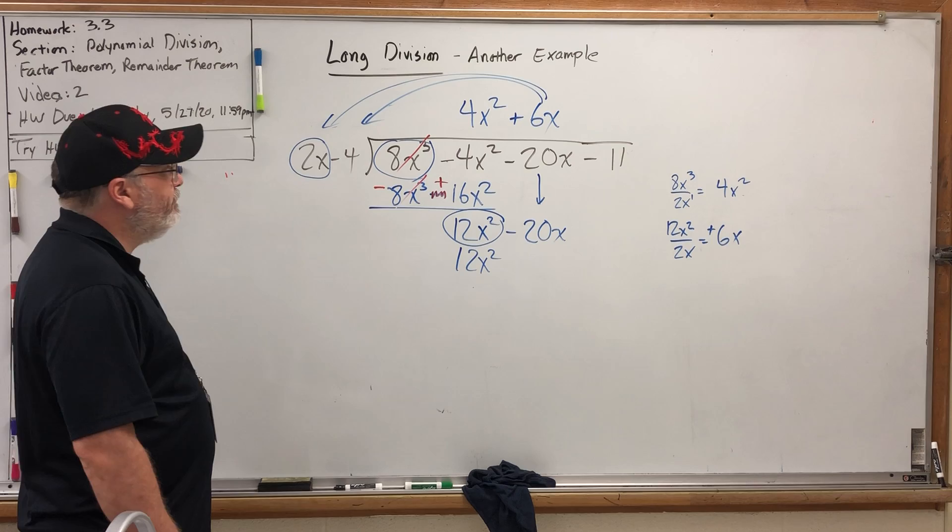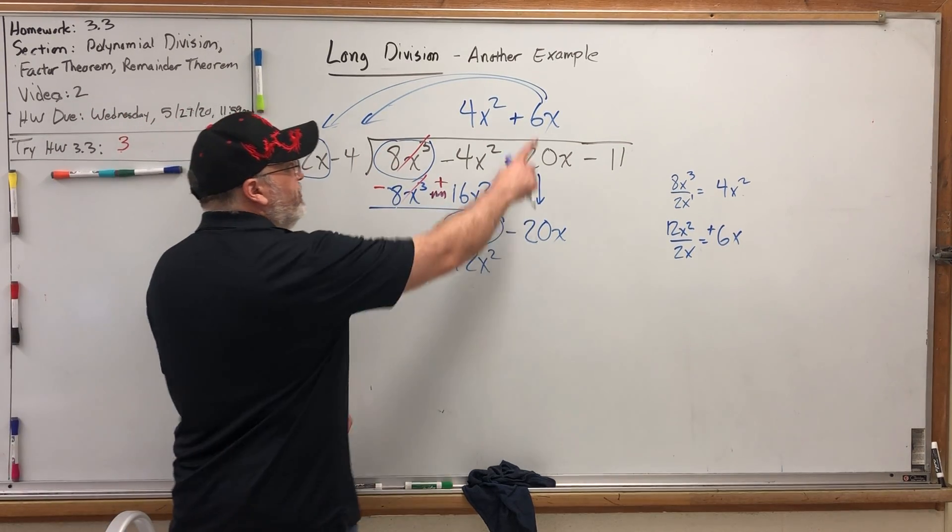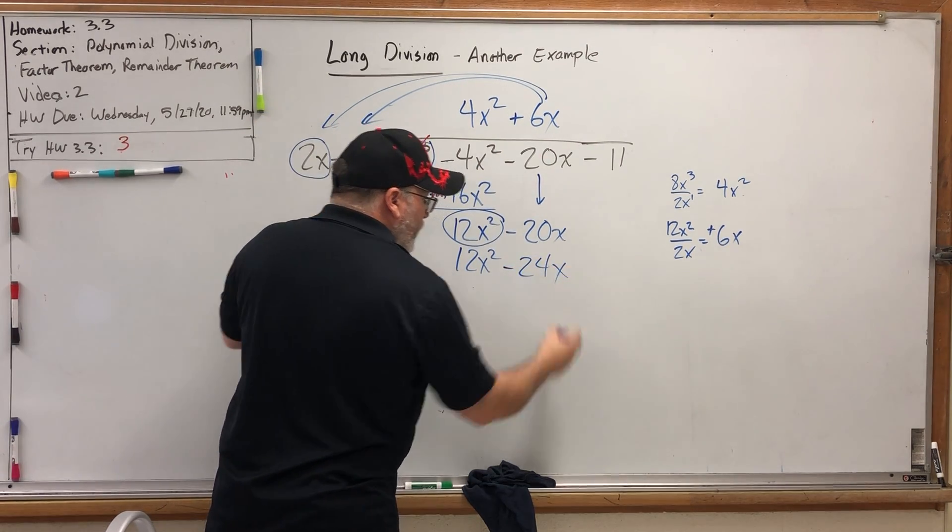It has nothing to do with multiplying. 6x times 2x is 12x². But positive 6x times -4 is -24x.